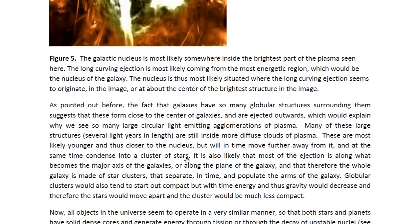These would therefore turn into clusters of stars eventually. These will also be younger and thus closer to the nucleus, but will in time move further away from it and at the same time condense into a cluster of stars. It's also likely that most of the ejection is along what becomes the major axis of the galaxies or along the plane of the galaxy, and that therefore the whole galaxy is made of star clusters that separate in time and populate the arms of the galaxy. Globular clusters would also tend to start out compact, as I mentioned before, but with time, energy and thus gravity would decrease, and therefore the stars would move apart and the cluster would be much less compact.